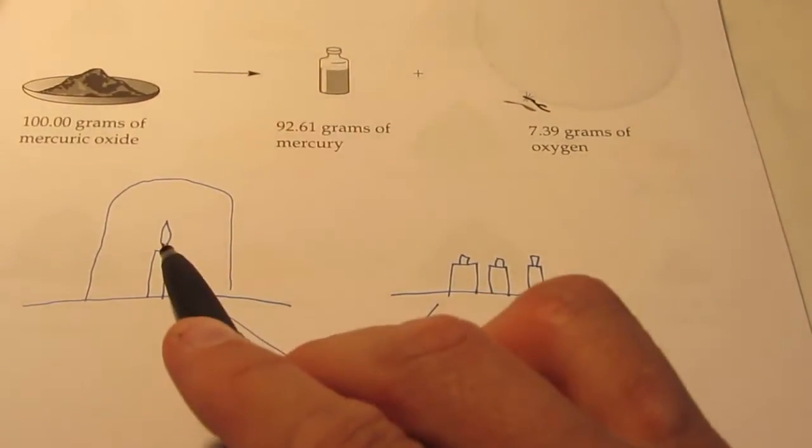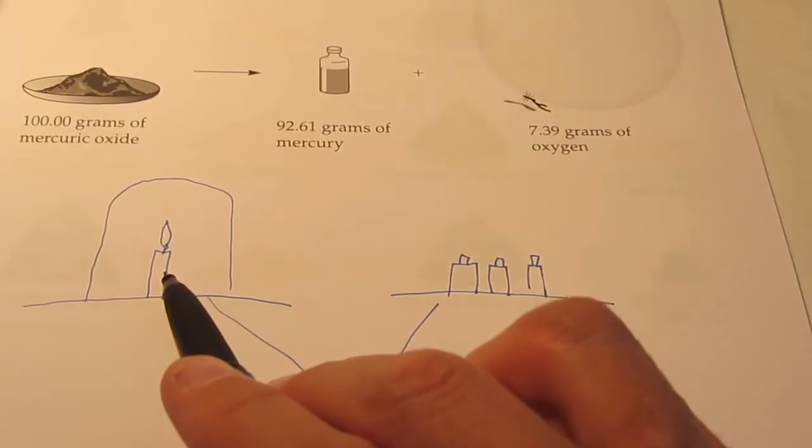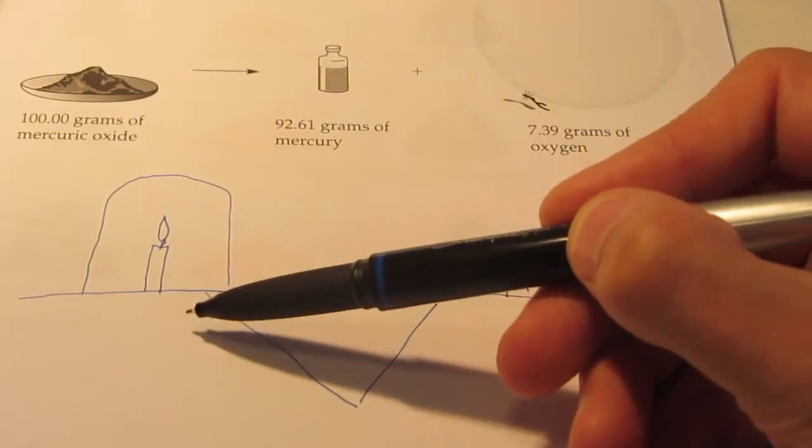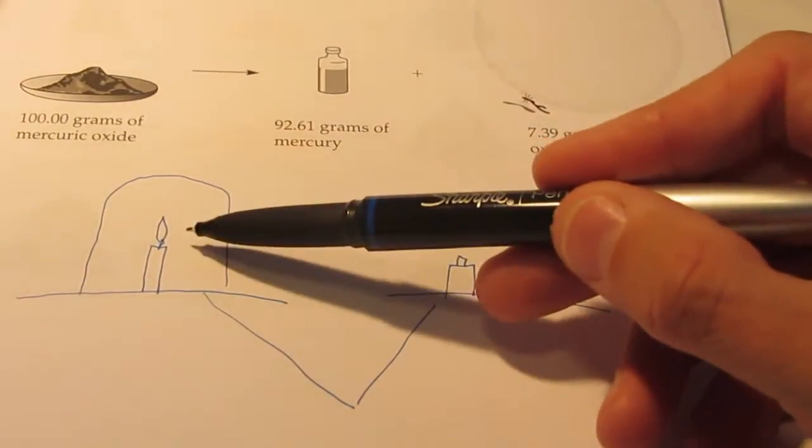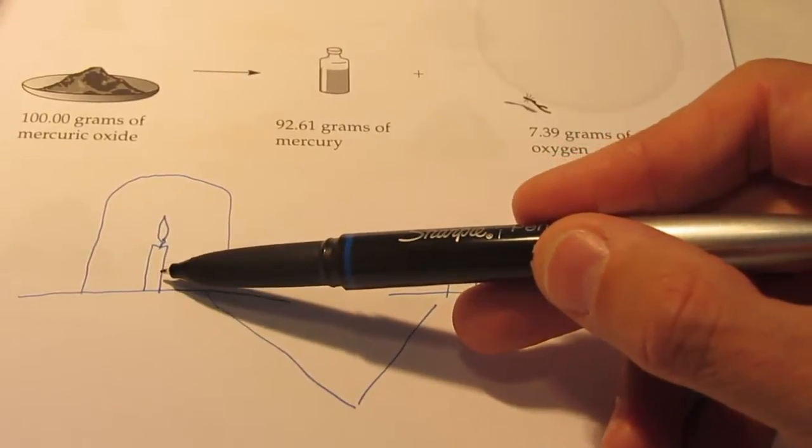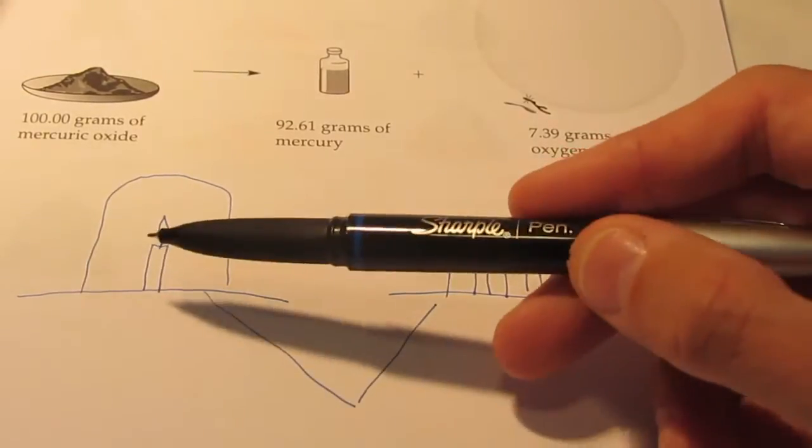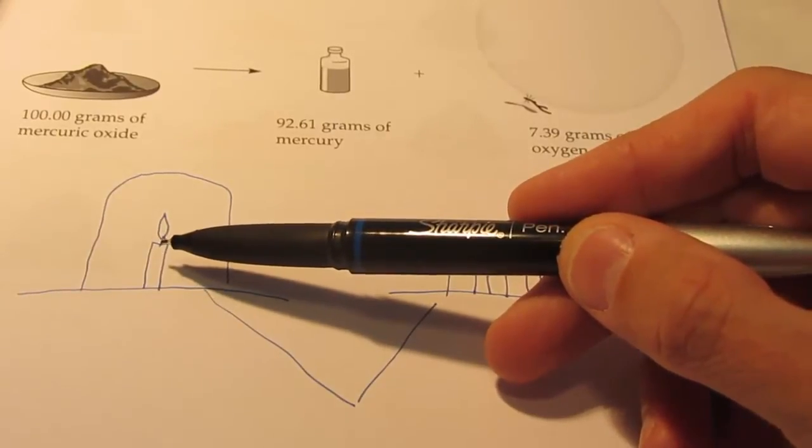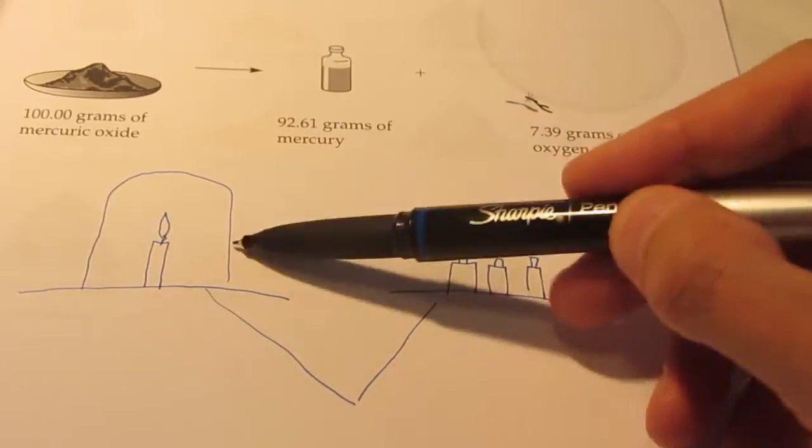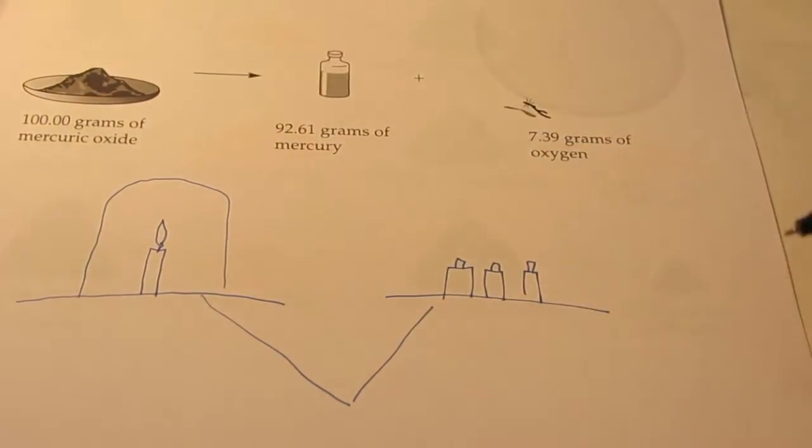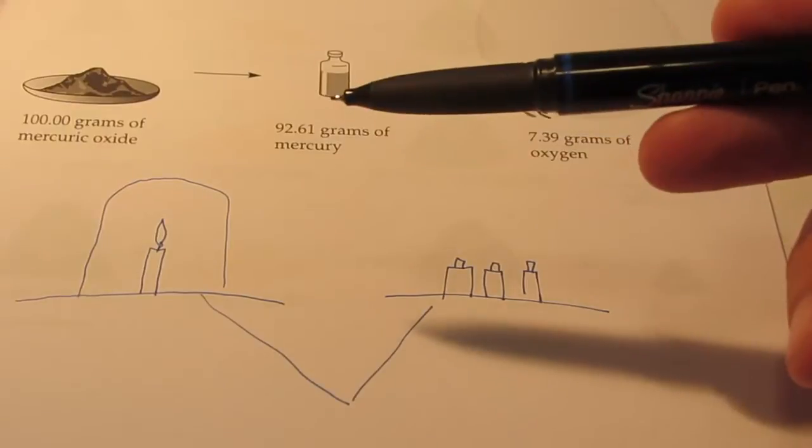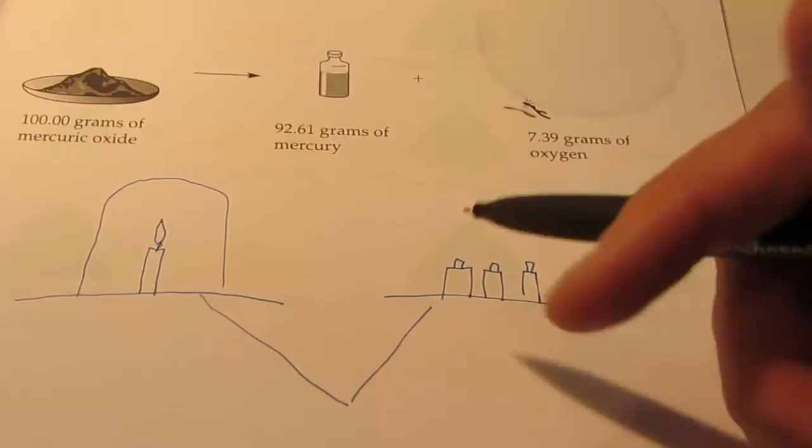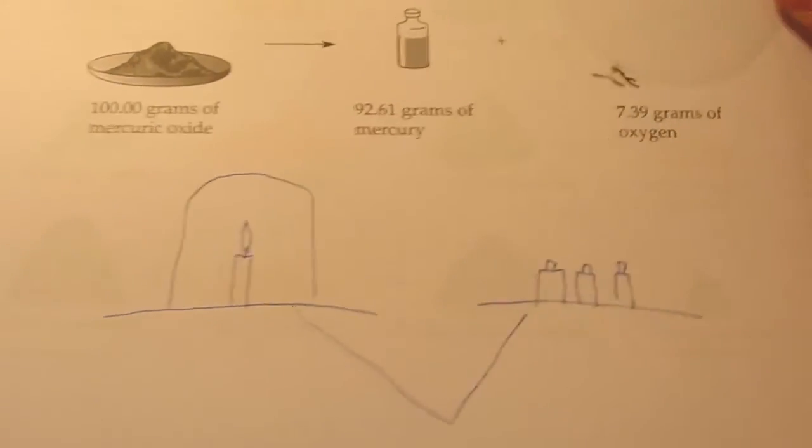Now, what would happen as that candle got smaller and smaller and smaller? Well, one might think that this side of the balance would tip down because the mass inside this jar would be getting smaller because that candle was disappearing. But in fact, the atoms are just rearranging themselves, turning into carbon dioxide and water vapor and remaining inside that container so the mass would not change. The mass before reaction is the same as the mass after the reaction. So those particles can rearrange themselves, but we can't destroy them. They're always going to be with us.